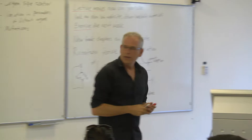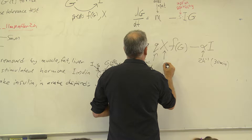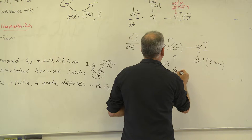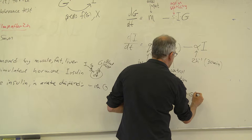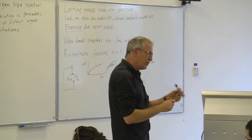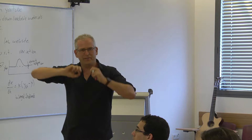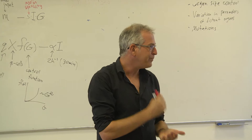Q is insulin production per beta cell, X is the number of beta cells, and F(G) is the control function where the more glucose you have, the more insulin you make. It's estimated to go like G-squared. What the beta cells do is take the glucose and break it up via glycolysis, changing their ATP-to-ADP ratio, causing a calcium outflux, causing vesicles of insulin to go to the membrane and release insulin. I'm rolling all of that up in F of G.